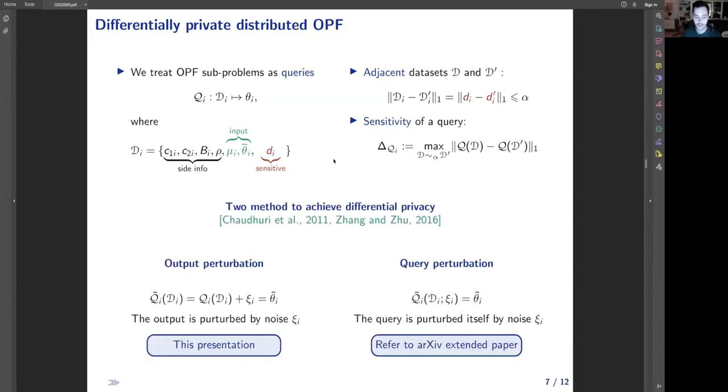There are two general ways to make it differentially private. First one is output perturbation, where voltage angle updates are augmented with noise in computation. The subject of this presentation. There is also a query perturbation method that is not explained in this talk, but we refer to the arXiv version of this paper for further details.